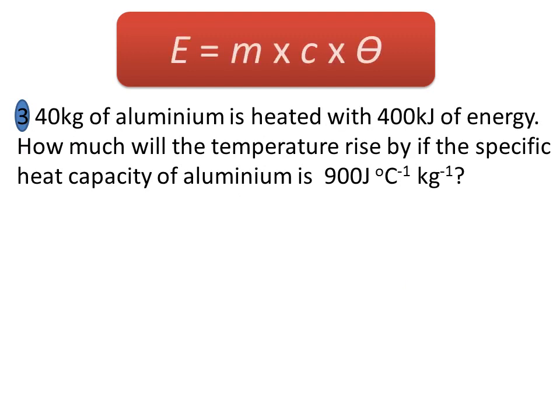Last but not least, a fairly tricky question. This time it's trying to figure out the temperature rise. We're trying to figure out theta. So if we've got 40 kilograms of aluminium we're heating with 400 kilojoules of energy, what will the temperature rise by if the specific heat capacity of aluminium is 900?